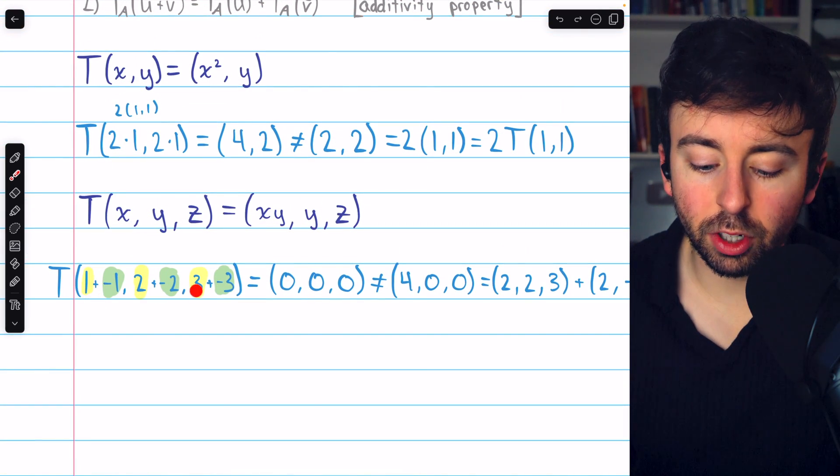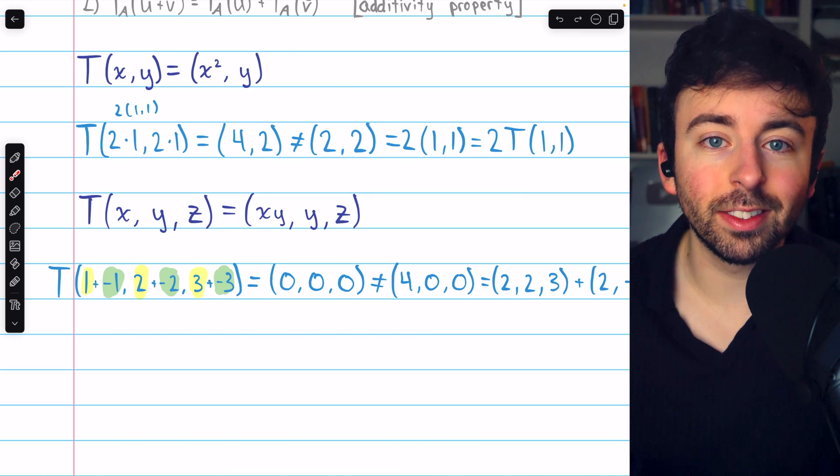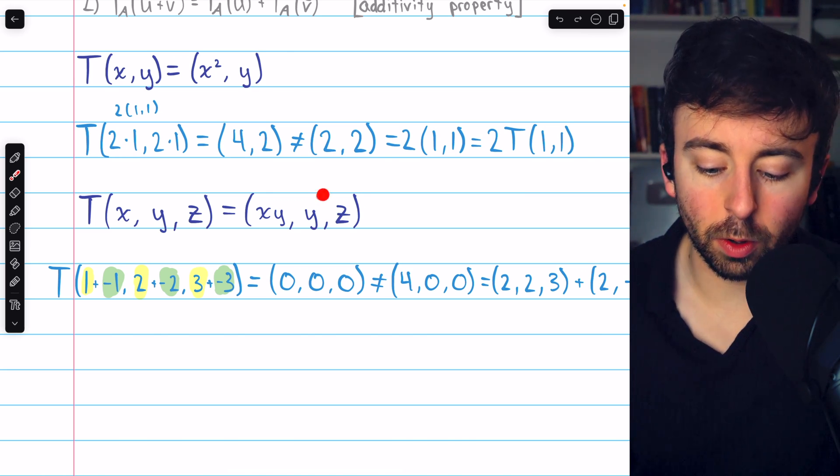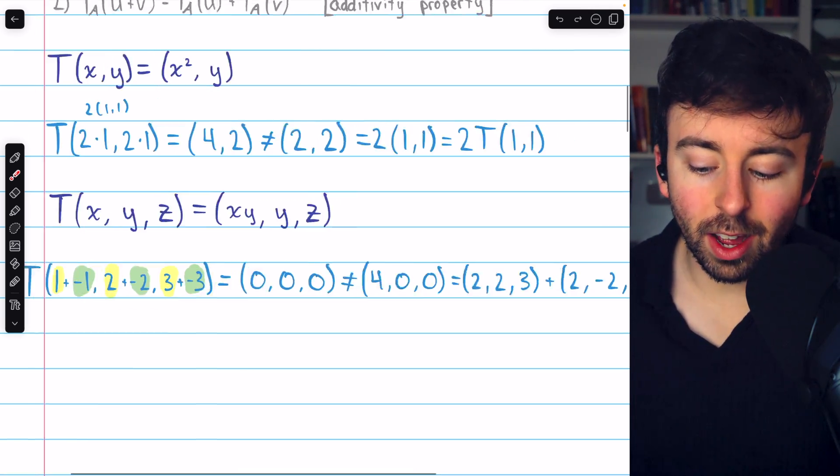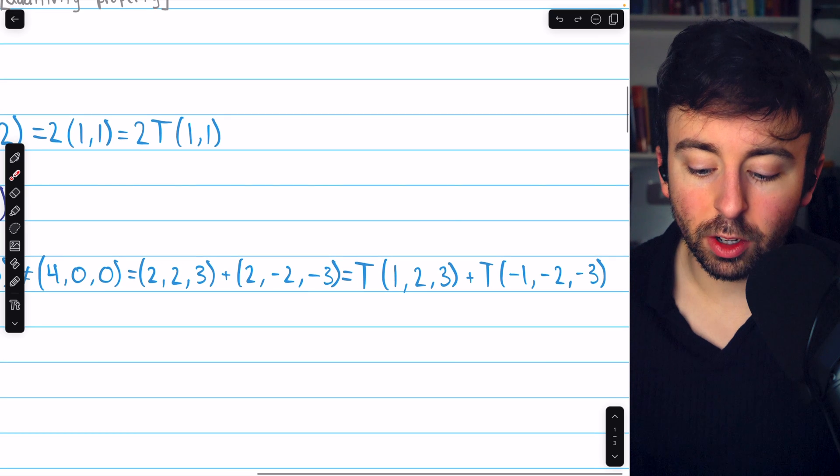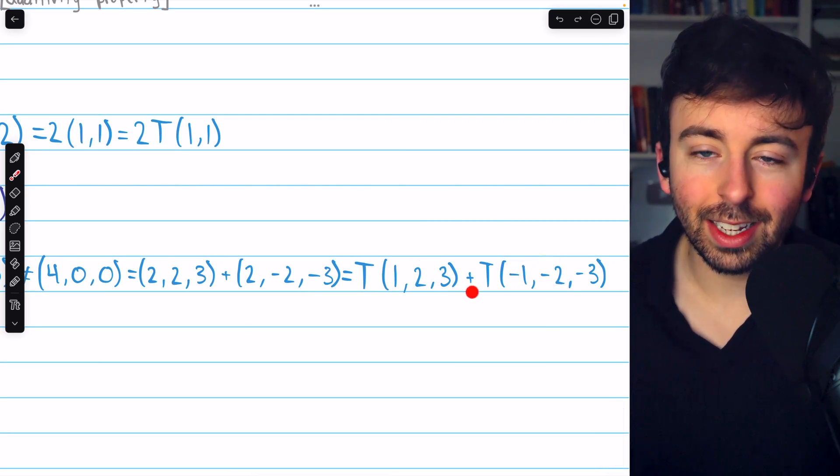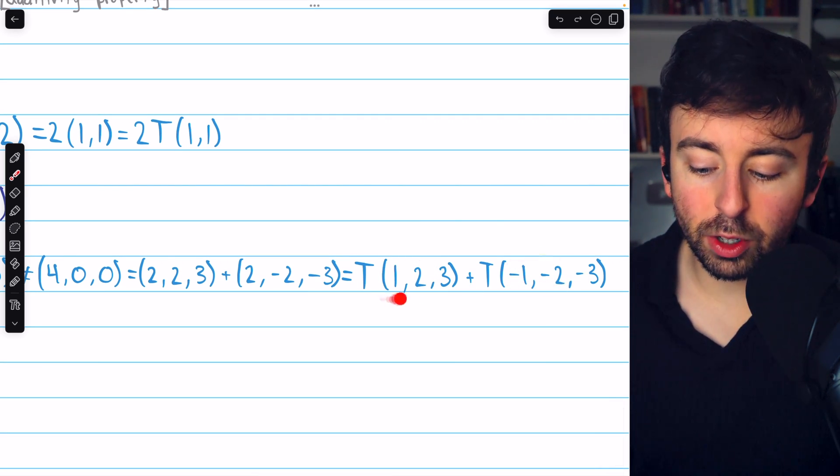1 plus -1, 2 plus -2, and 3 plus -3 are all 0. And if you consider the way this transform works, that's going to just output (0,0,0).